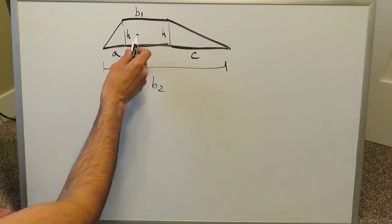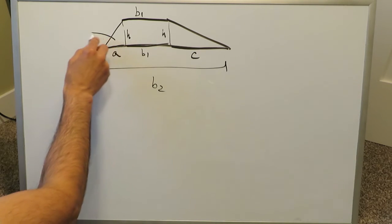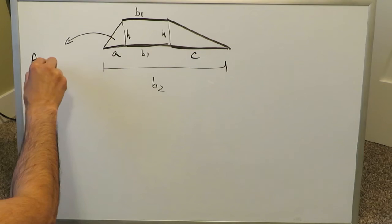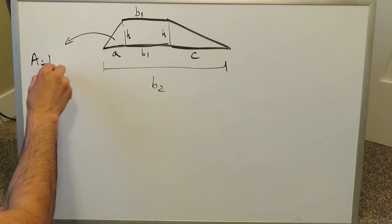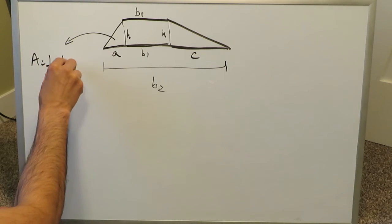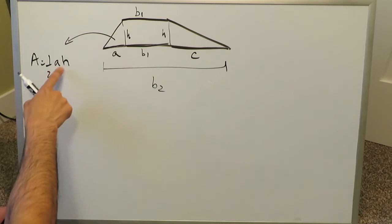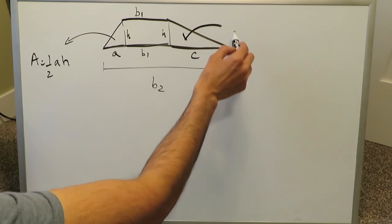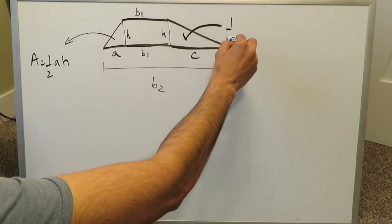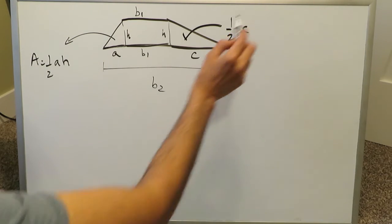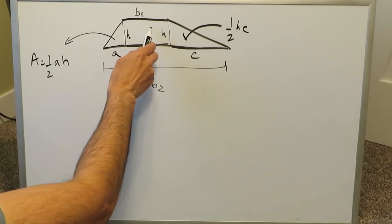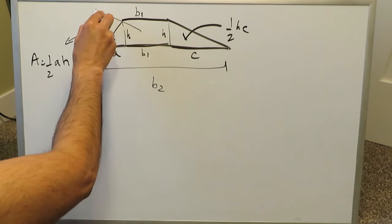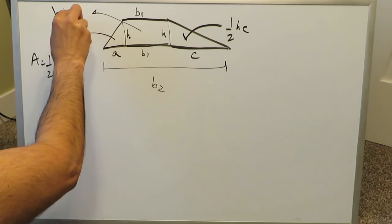But when you look at this entire formula, you've broken it into three shapes. You have two triangles and one rectangle. The area of this triangle is half base times height. You let half times a times h, base times height of that triangle. The area of this triangle correspondingly is again also half base times height. It will be half h, c. The area of this rectangle is going to be b1, h.